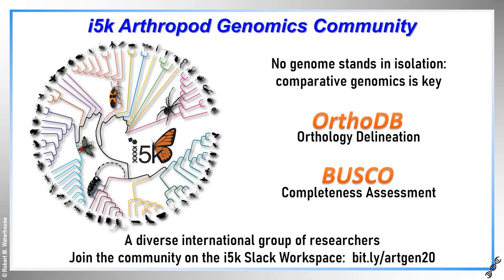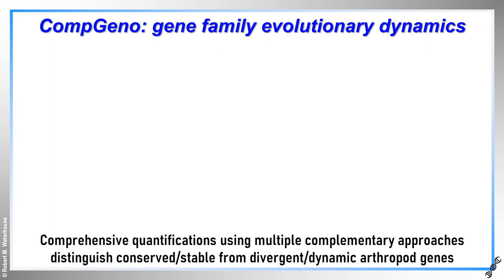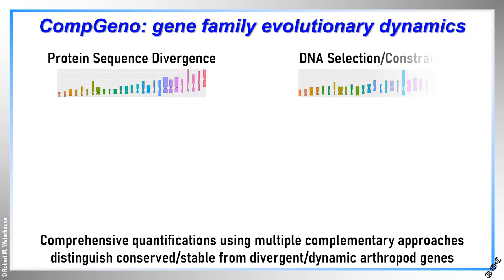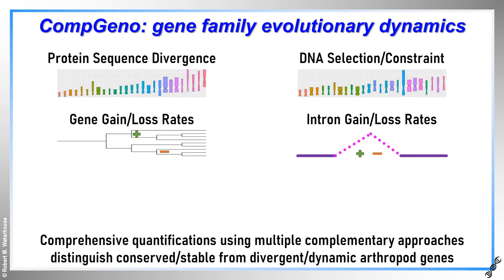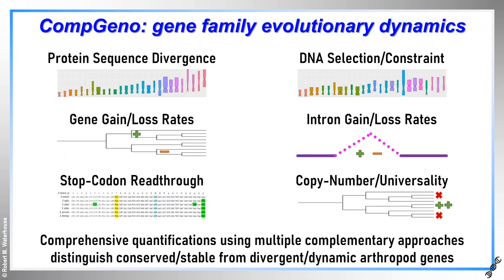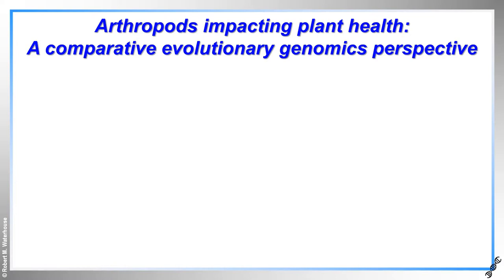So that was a bit of context, and now let's move on to some content. Before looking at some case studies, I should introduce you to some of the comparative genomics analyses that are key to understanding how genes and genomes evolve. Comparative genomics approaches allow us to quantify gene and gene family evolutionary dynamics to contrast conserved or stable versus divergent or dynamic arthropod genes. This can involve employing sequence-based metrics at protein and DNA levels, but also quantifying rates of gene and intron gains and losses across the phylogeny, as well as identifying stop codon read-through candidates and building phyletic profiles.